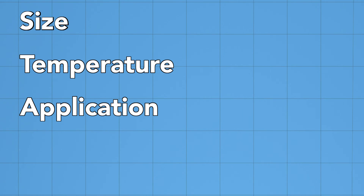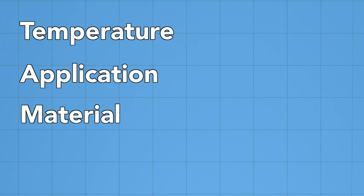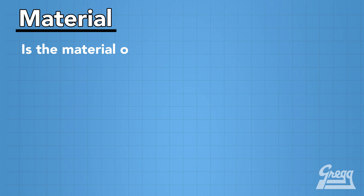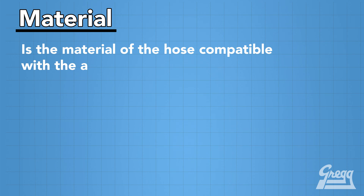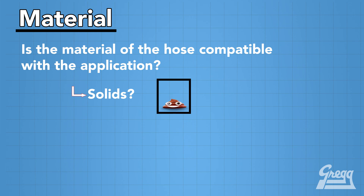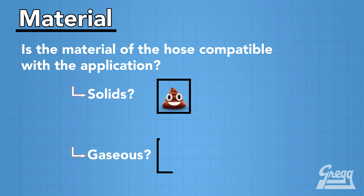M stands for material. This is the composition of the hose to ensure compatibility within the application. We need to know if there are solids going through the hose and what size and type they are. We also need to know if it is involved in a gaseous application.